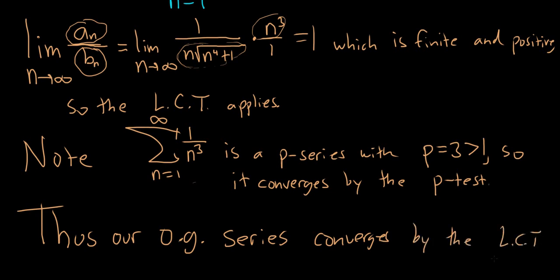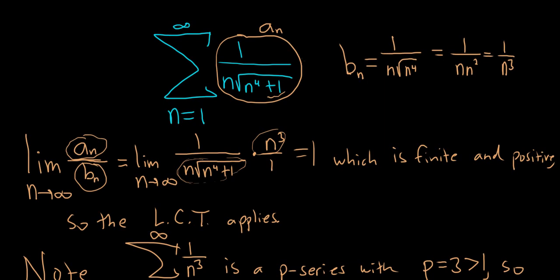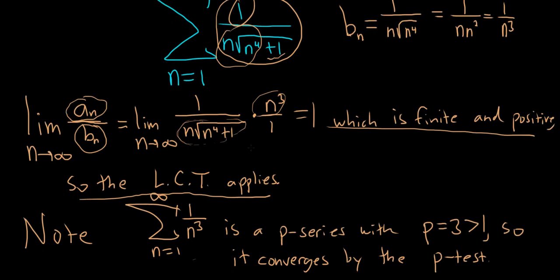Went through that kind of quickly, but this is a classic limit comparison test problem because it's not hard to figure out b_n. You just look at the leading terms, ignore the smaller terms. That usually gives you b_n. So you go through the motions: find b, take this limit, verify it's finite and positive, then make sure to mention LCT applies.